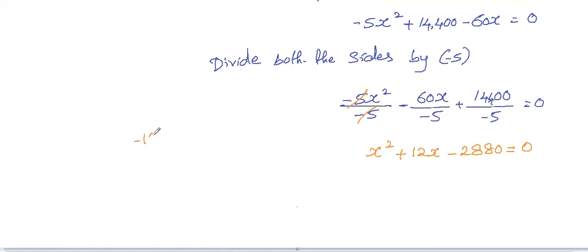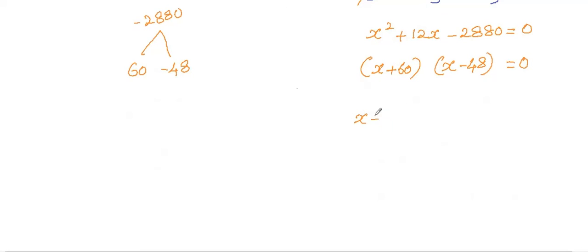Now find the factors of this. The factors of minus 2880 are 60 and minus 48, so the factors are X plus 60 and X minus 48.